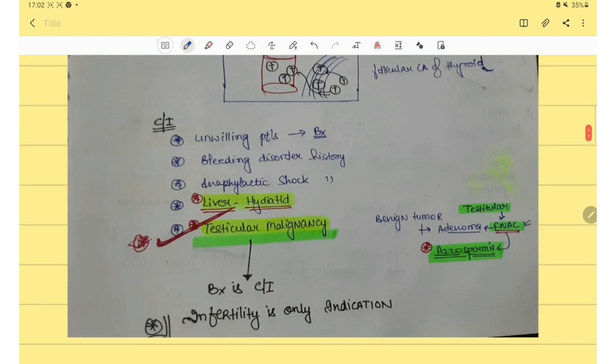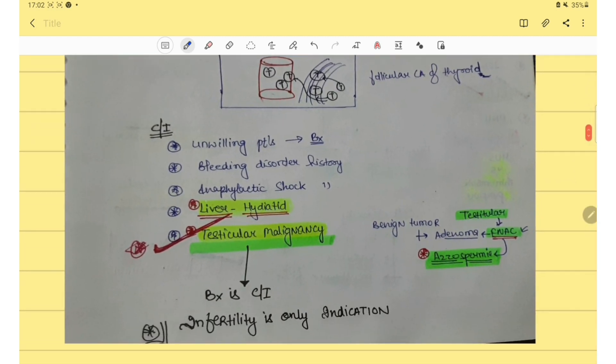Second thing you should know is that tissue biopsy is contraindicated in liver hydatid cysts and in testicular malignancy.